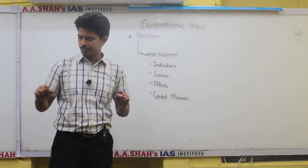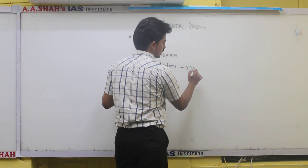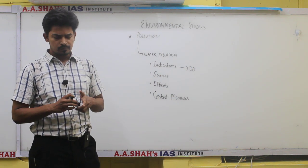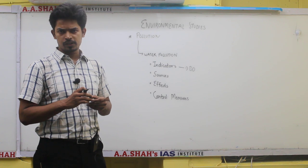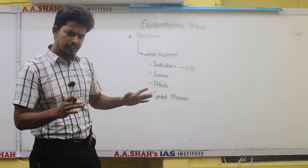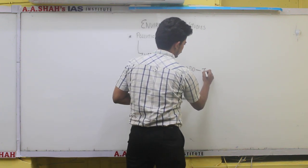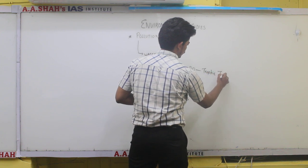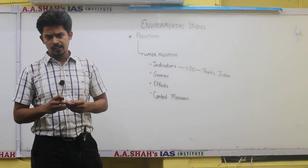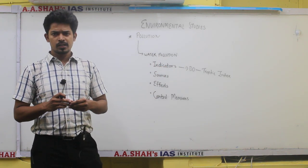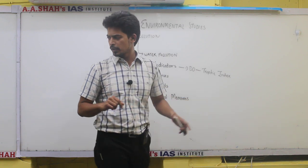For that we have certain technical indicators. One indicator is DO - dissolved oxygen. Dissolved oxygen is measured in milligrams per liter. Water bodies have dissolved oxygen at different levels. Accordingly, the trophicity of the water is calculated - trophic index. If dissolved oxygen is high, the water is oligotrophic. And as it reduces, it becomes eutrophic.